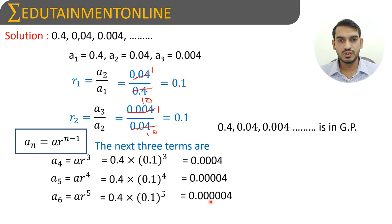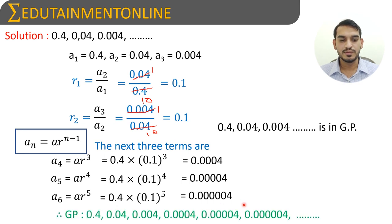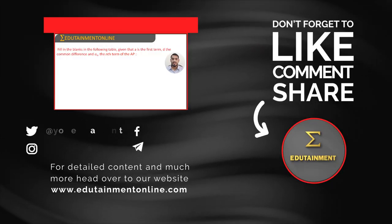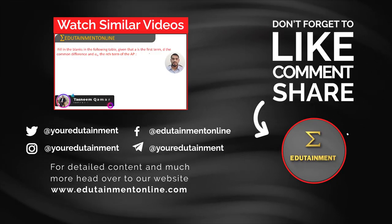Therefore, the series is 0.4, 0.04, 0.004, and so on. These three are the last three terms which we found: a₄, a₅, and a₆—0.0004, 0.00004, 0.000004.